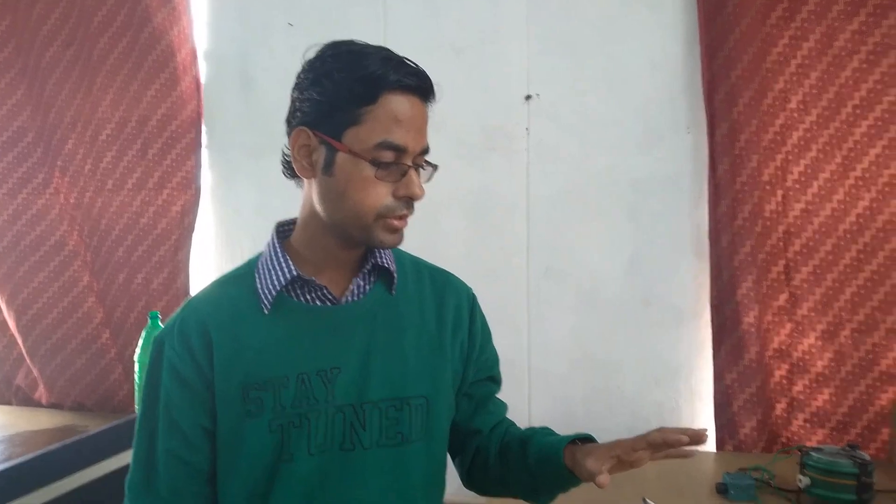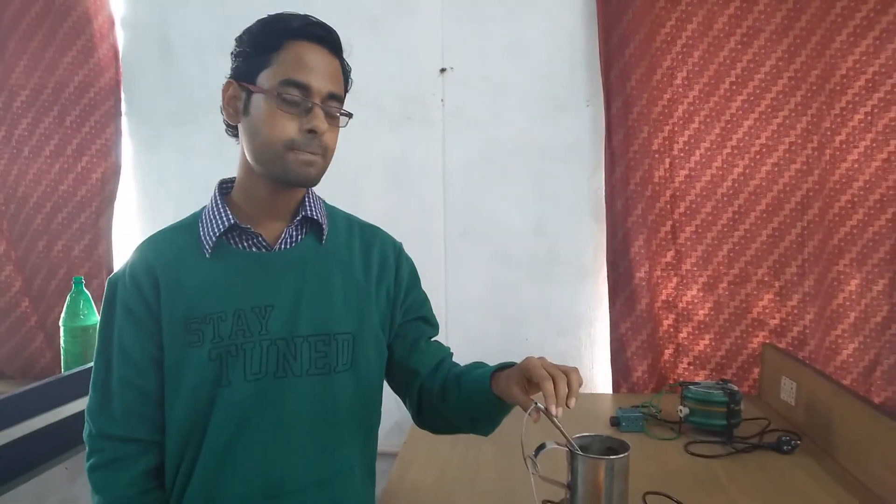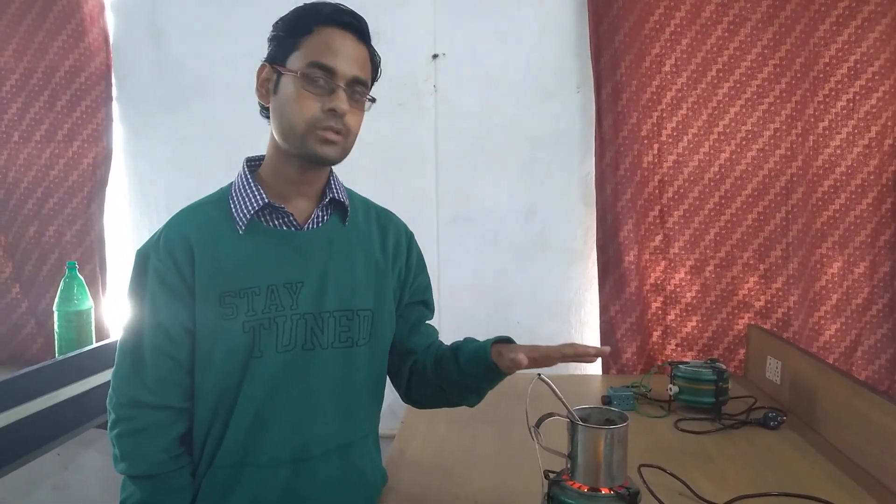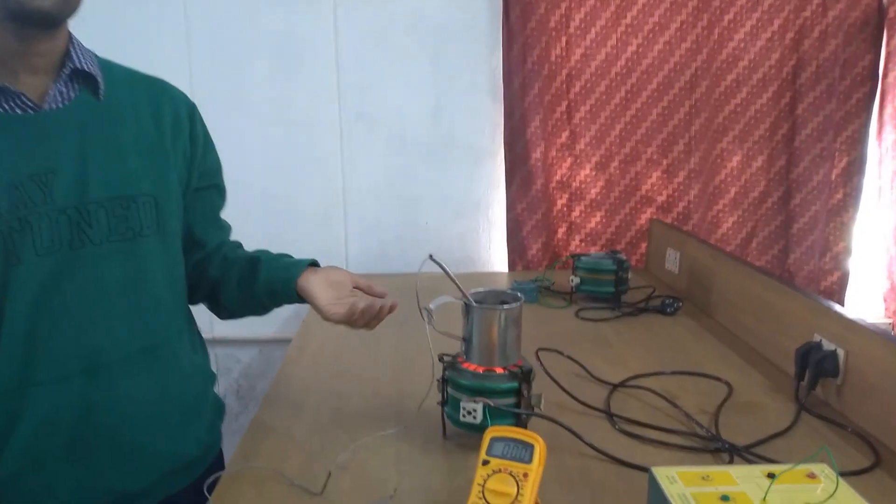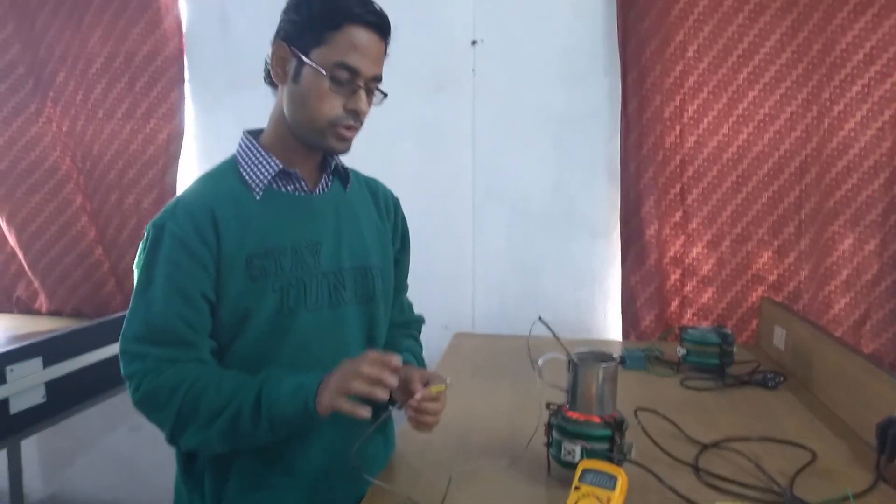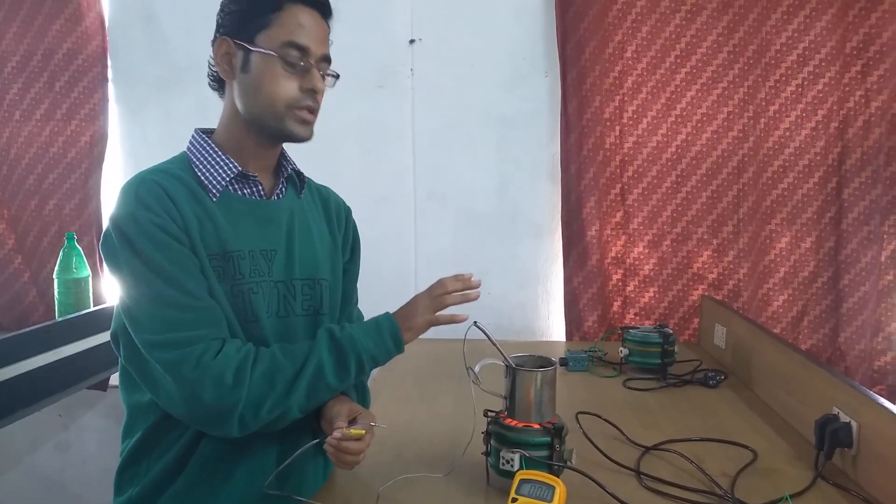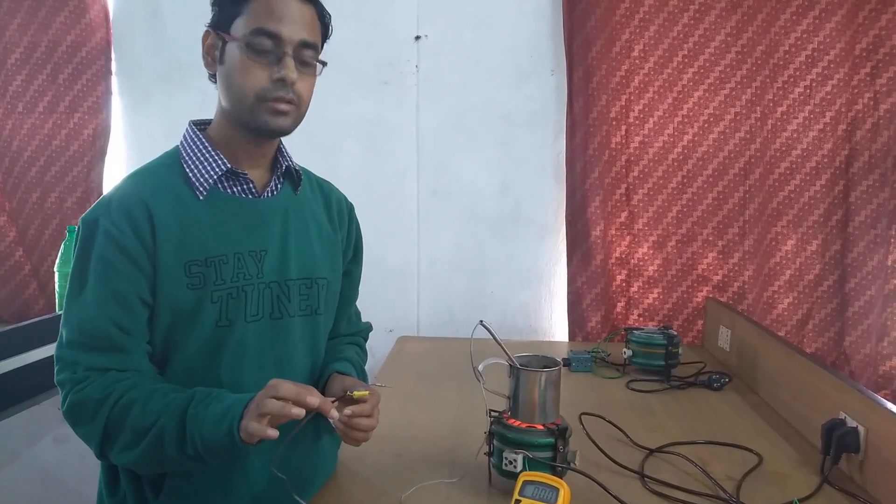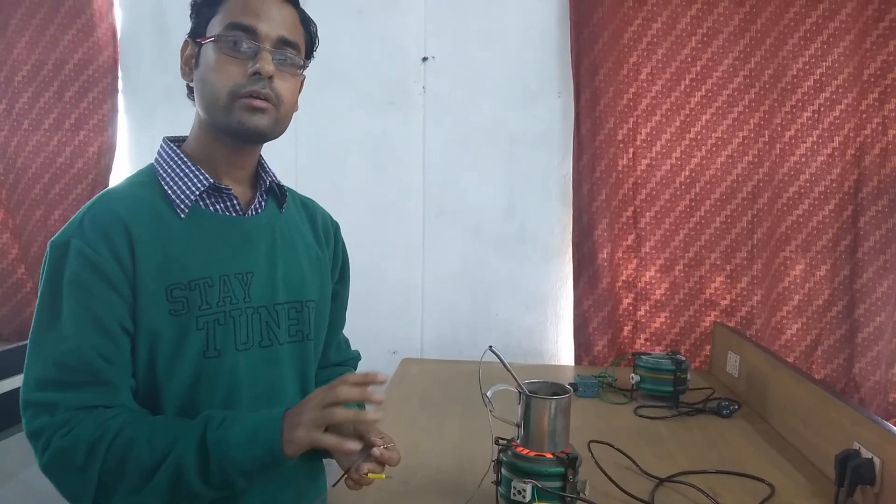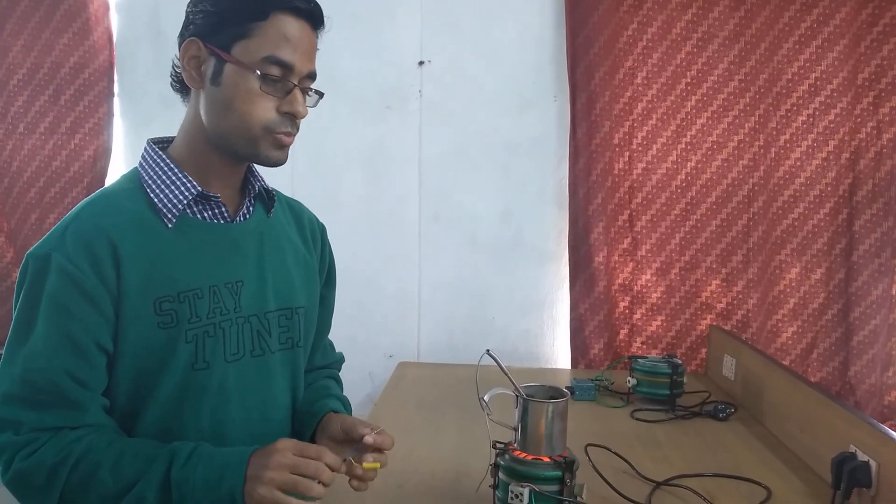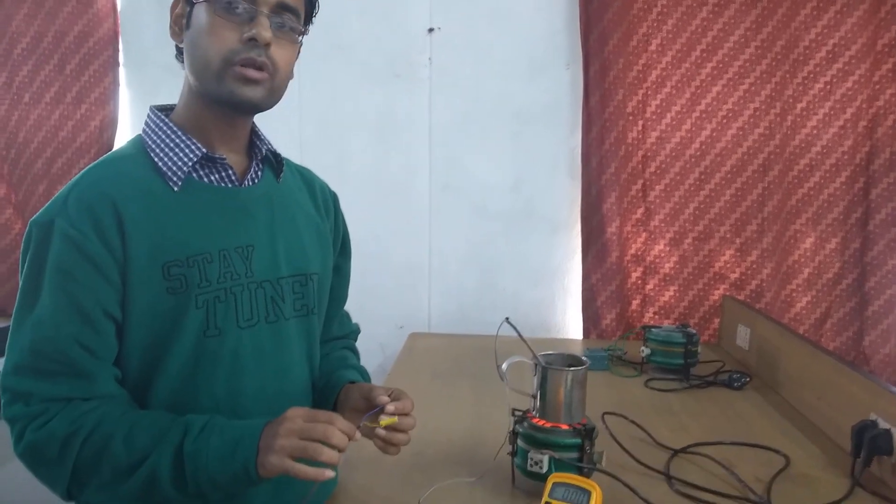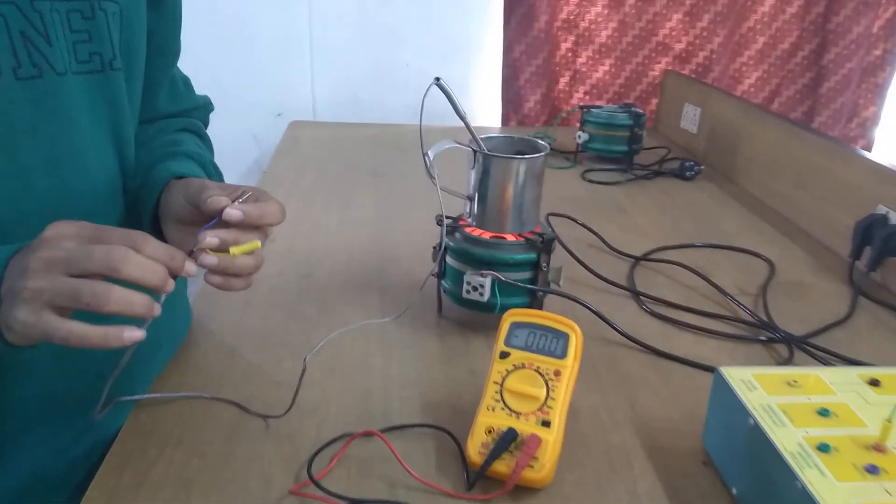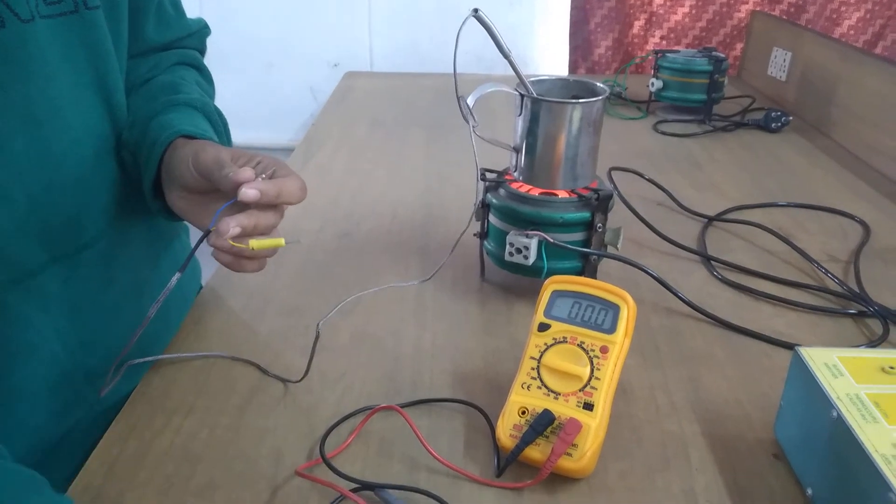So here we have dipped the thermocouple in a process tank. You can think of this as a process tank. So right now this beaker is containing water and we have heated it up. So what we want to do is now we find that the hot junction is at process temperature and the cold junction is at ambient. So we want to look at the variation of output voltage as provided by this particular thermocouple. Note that this is a J type thermocouple which means that the constituents are made of iron and constantan.